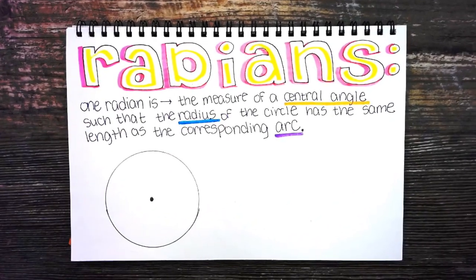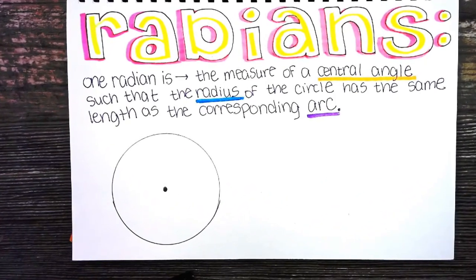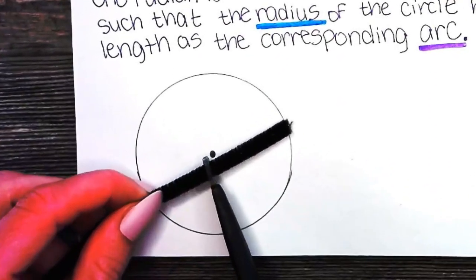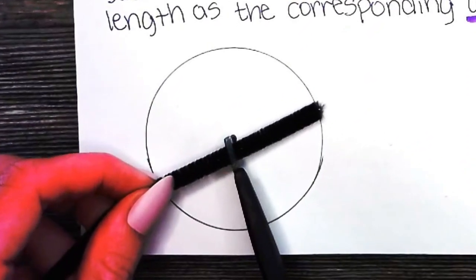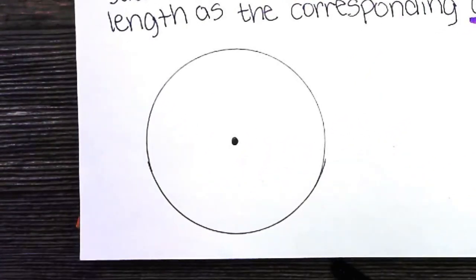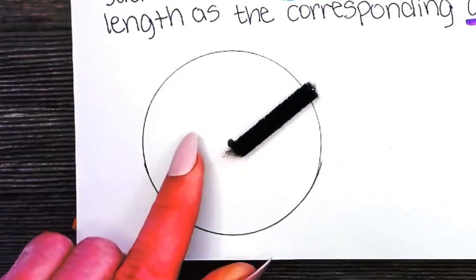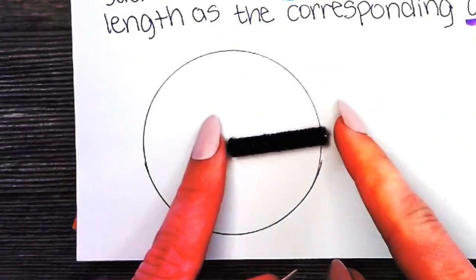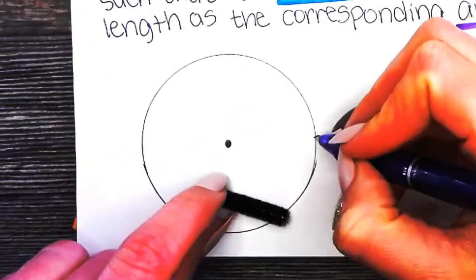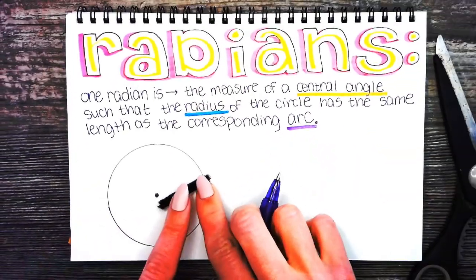To demonstrate this definition, I'm going to cut this pipe cleaner to be the size of the radius. So there we go. That's about the size of the radius. Now I'm going to mark where I'm lining it up and where I'm beginning.